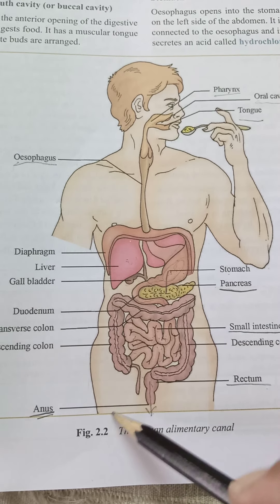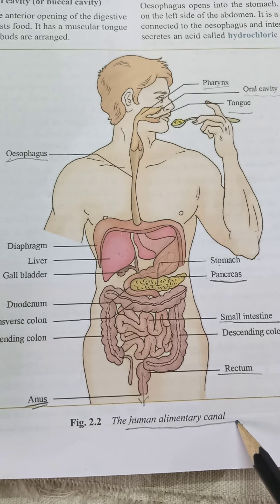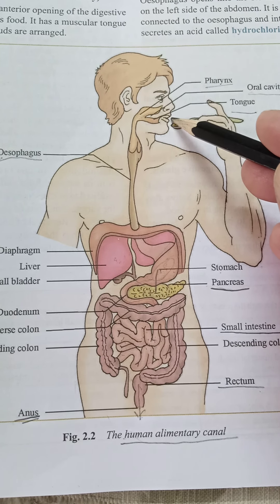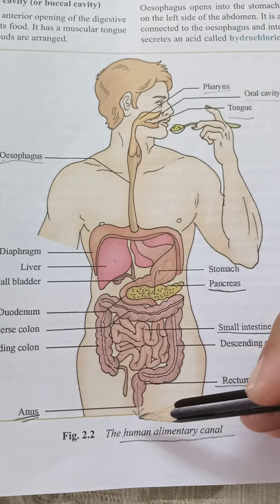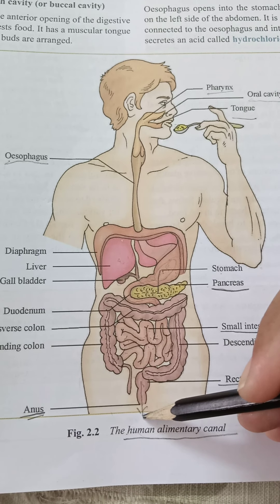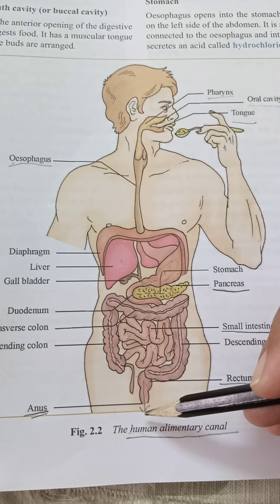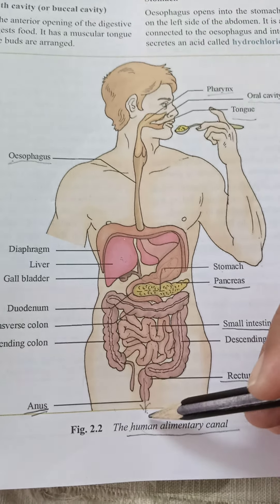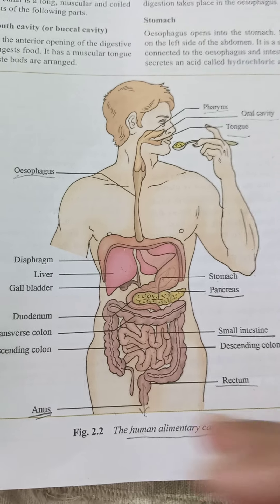اب اس figure کے through بھی کافی حد تک سمجھ آ گئی ہوگی۔ یہ ہماری پوری human alimentary canal ہے — یہ آپ کی opening ہے buccal cavity یا mouth کی، اور یہ آپ کی last opening ہے جو کہ egestion کے لیے ہے۔ Removal of undigested food — this is the complete process of digestion in human beings.